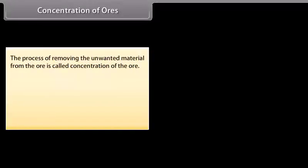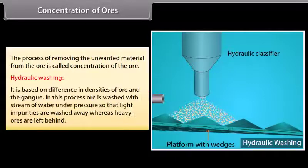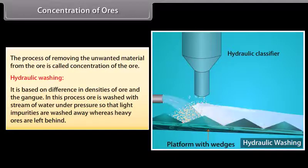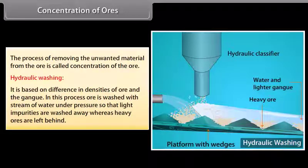Concentration of ores. The process of removing the unwanted material from the ore is called concentration of the ore. The important methods for concentration of the ore are hydraulic washing. It is based on difference in densities of ore and the gang. In this process, ore is washed with stream of water under pressure so that light impurities are washed away whereas heavy ores are left behind.